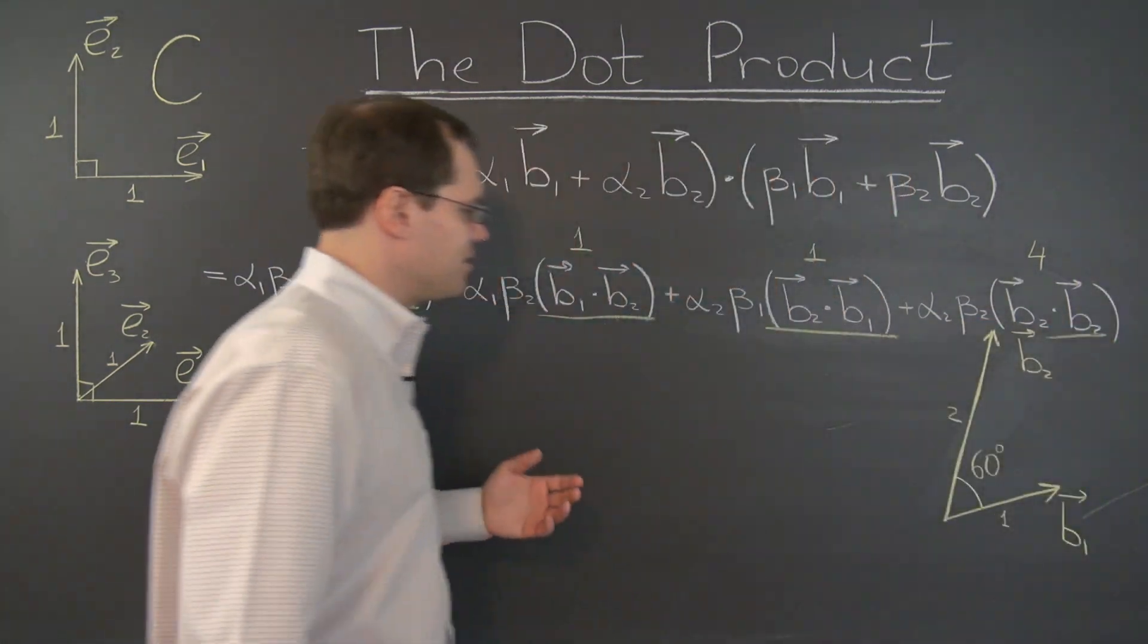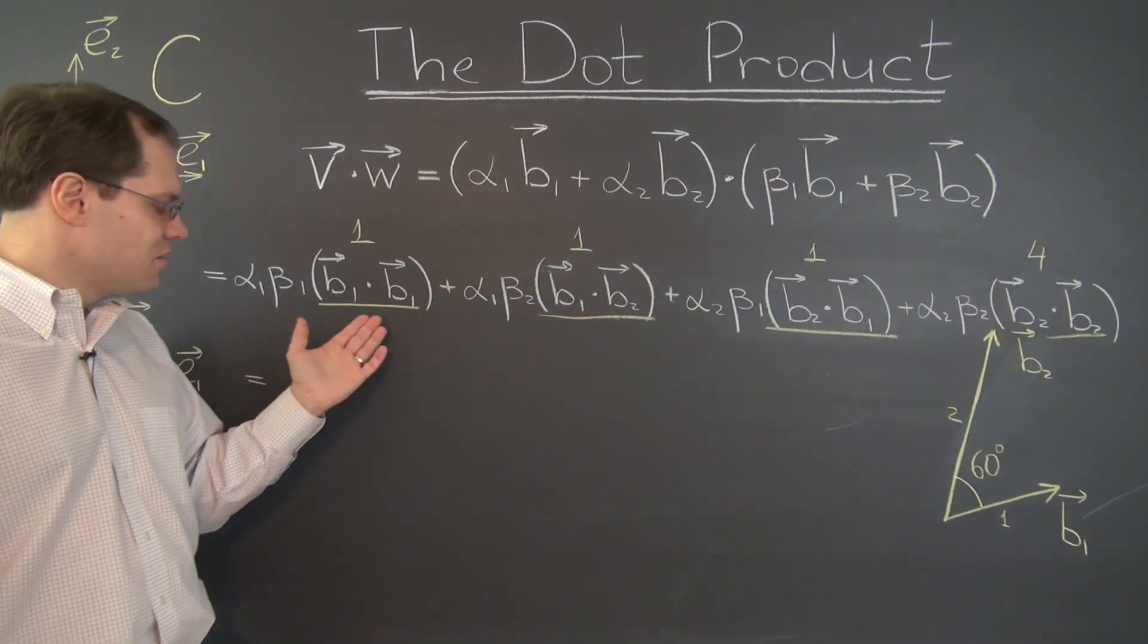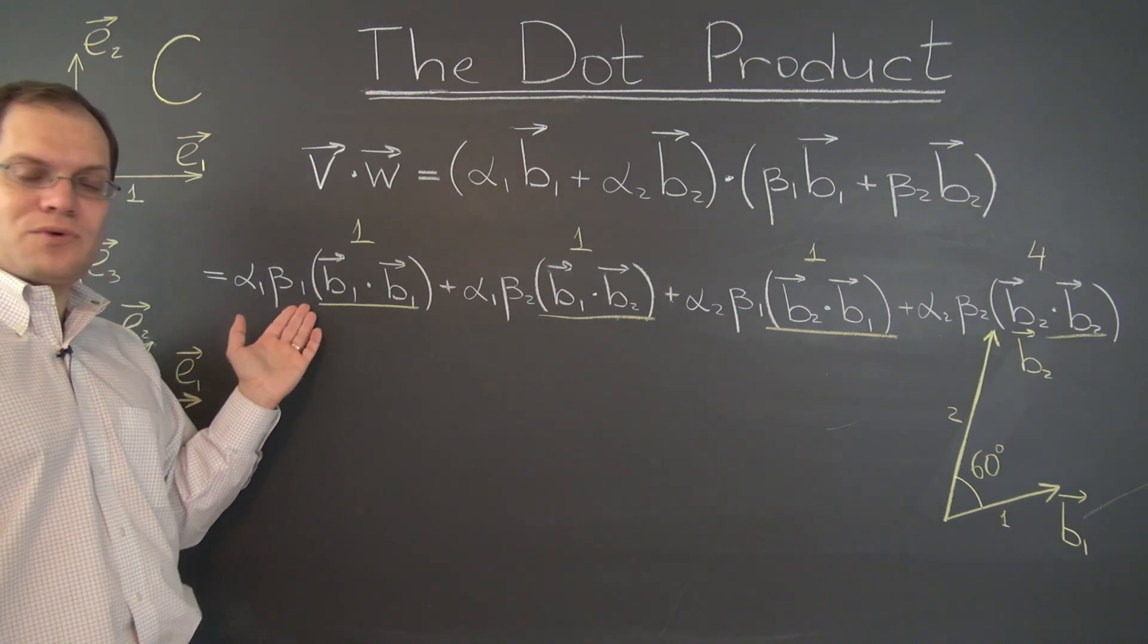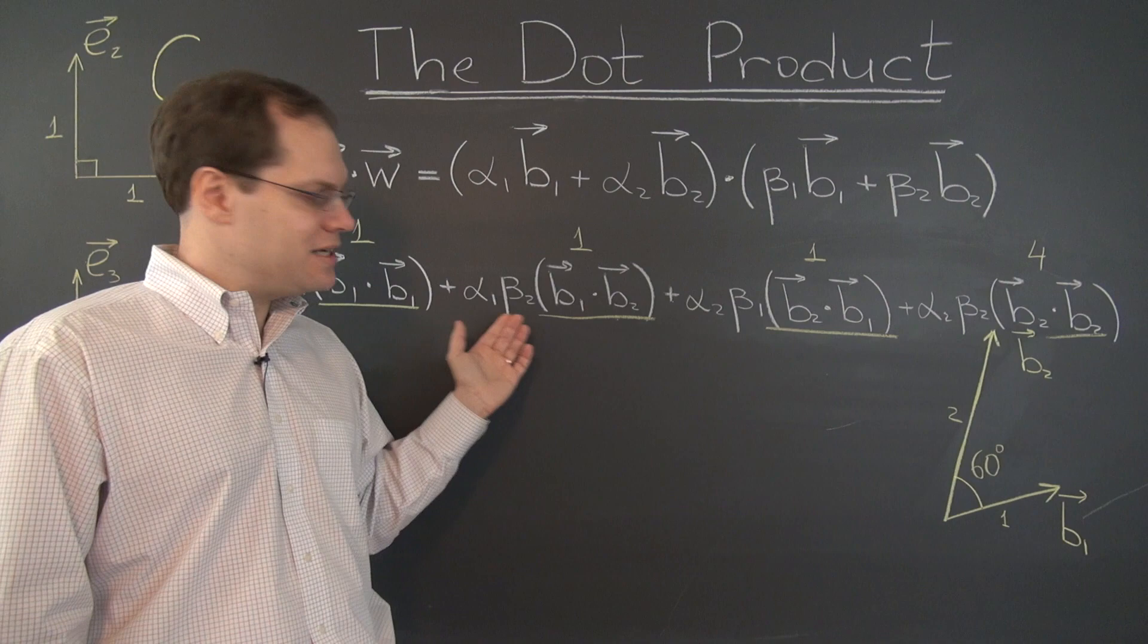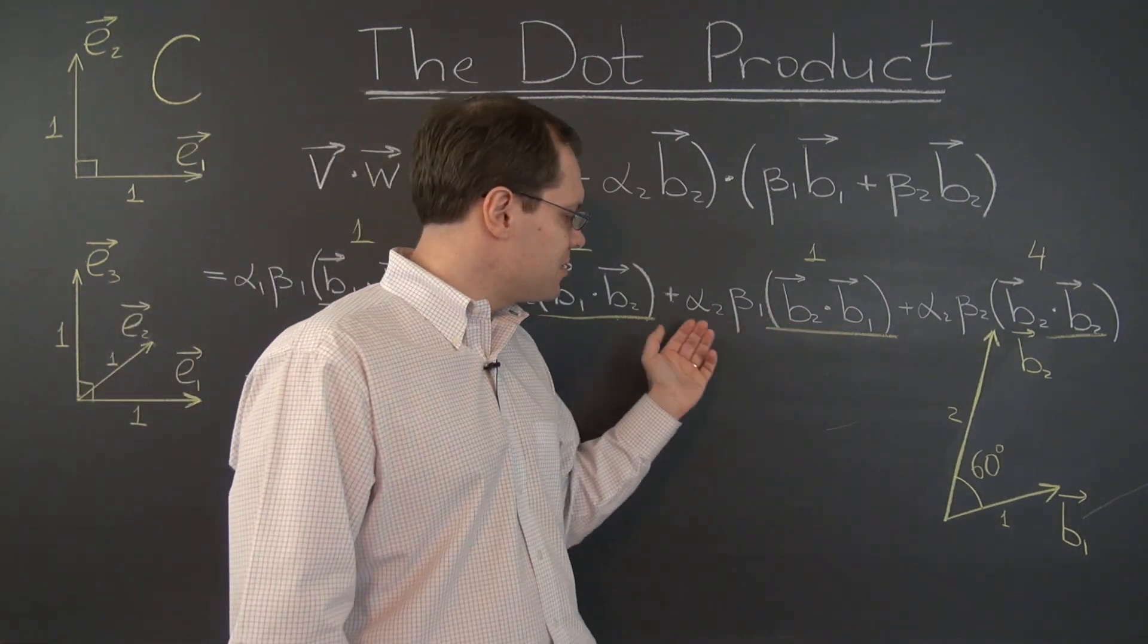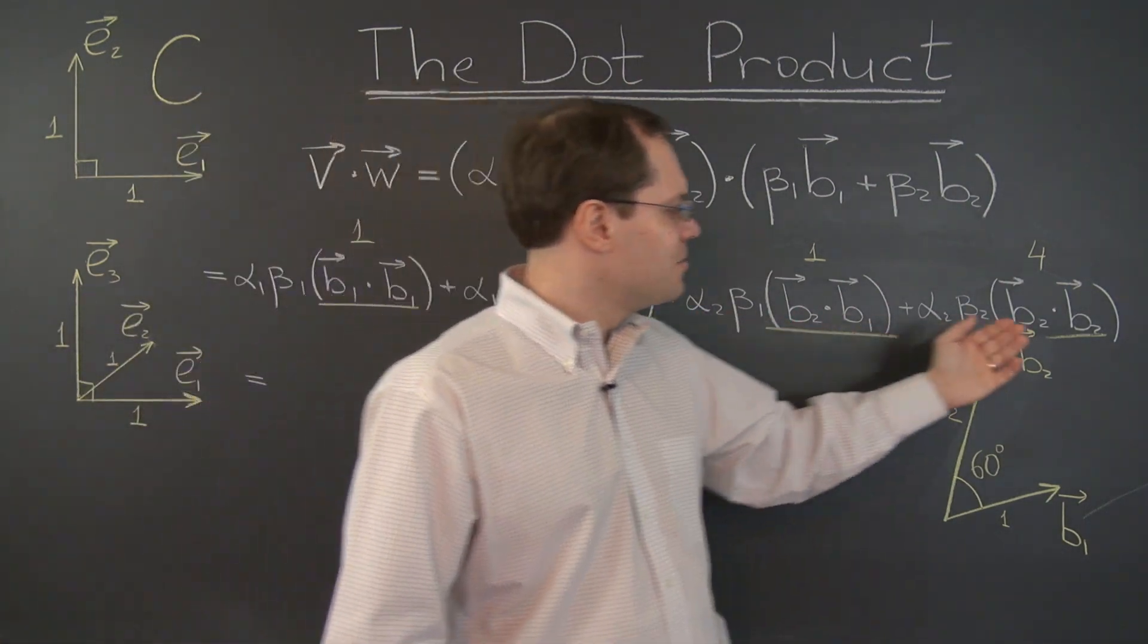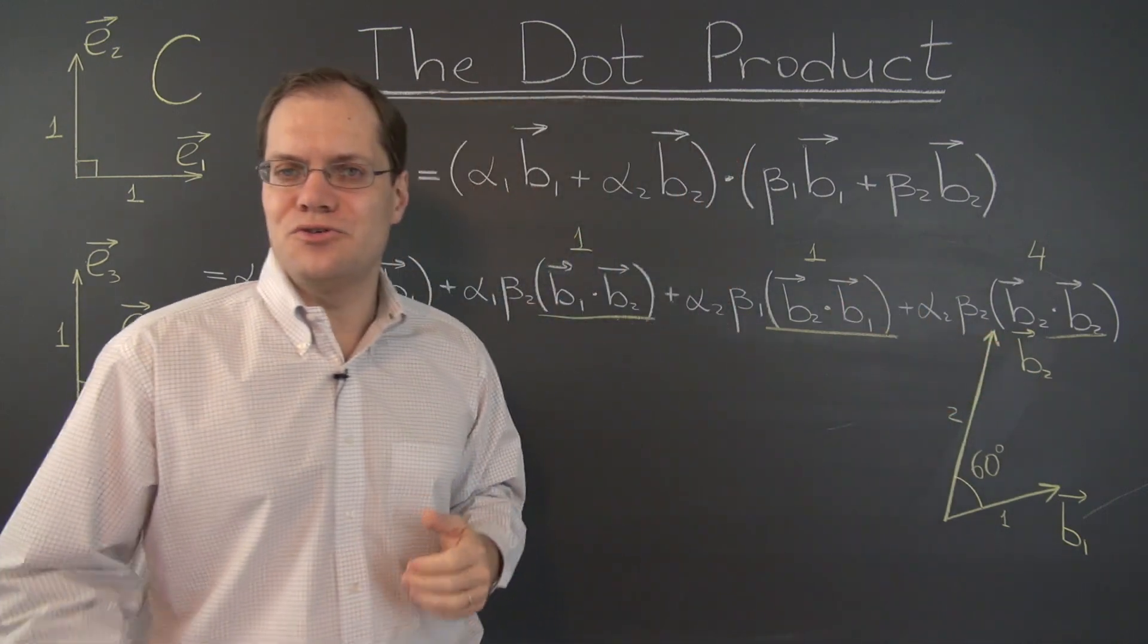And the answer would be whatever this number is times alpha 1 beta 1 plus whatever this number is times alpha 1 beta 2 plus whatever this number is times alpha 2 beta 1 plus whatever this number is times alpha 2 beta 2.